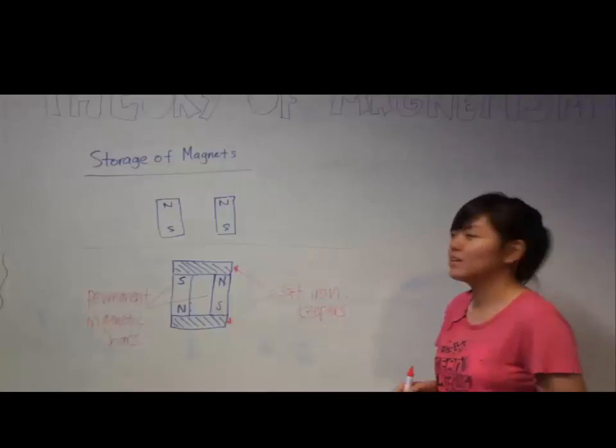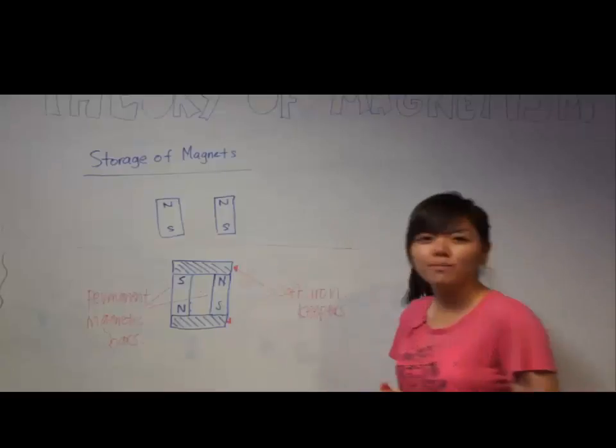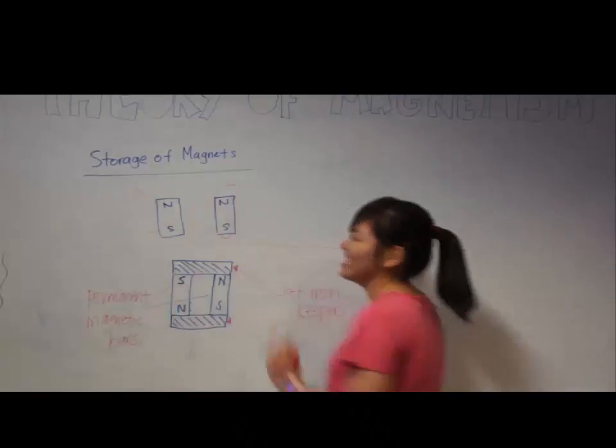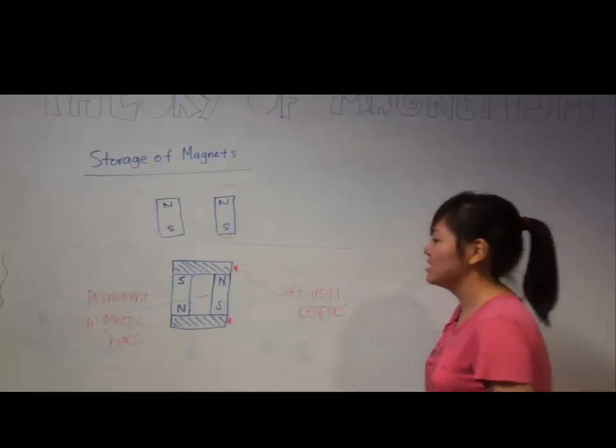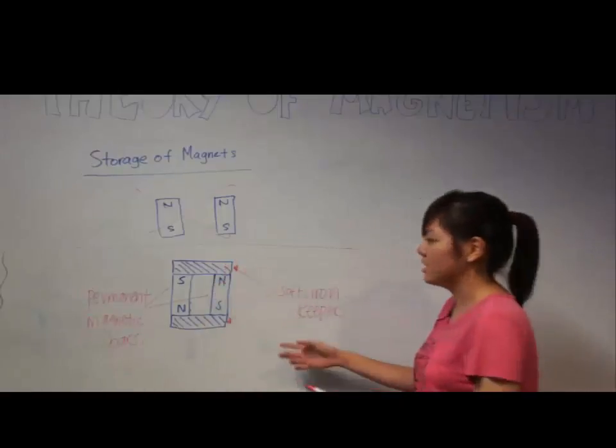Now we are talking about the storage of magnets. Magnets can be weakened if we put them side by side due to the repulsion of tiny magnets at the ends of the poles. This is the wrong way. To make it correct, we place the magnetic bars side by side with soft iron keepers at the end, as shown in the diagram.